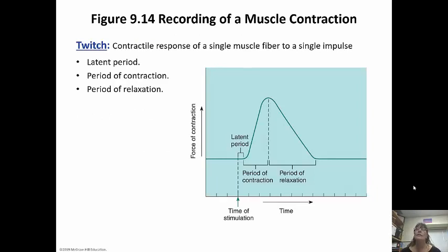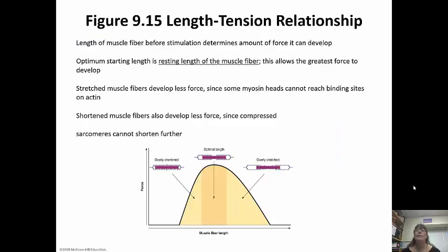A twitch is a contractile response of a single muscle fiber to a single impulse. It goes through a latent period, then a period of contraction, and then a period of relaxation. The latent period is the time it's taking for the acetylcholine to get there, for the impulse to get there, and for them to actually start contracting. The length of the muscle fiber before stimulation is going to determine the amount of force that can actually be developed. Optimum starting length is the resting length of the muscle fiber — that allows the greatest force to be developed. Stretched muscle fibers develop less force because some of the myosin heads aren't going to be able to reach the binding sites on the actin. Shortened muscle fibers also develop less force because they're already compressed and can't get any shorter.